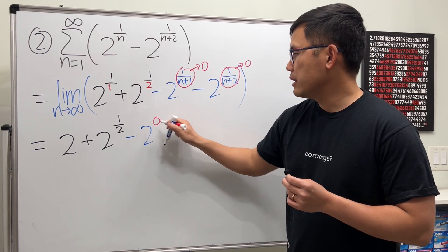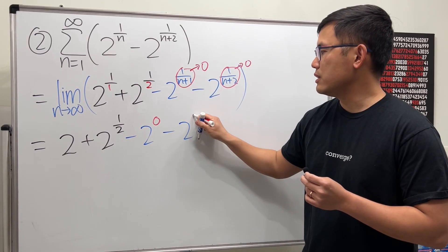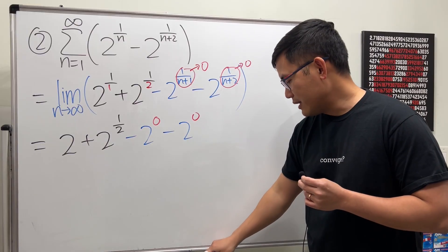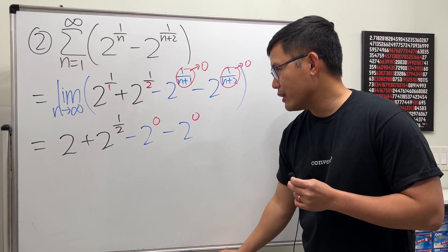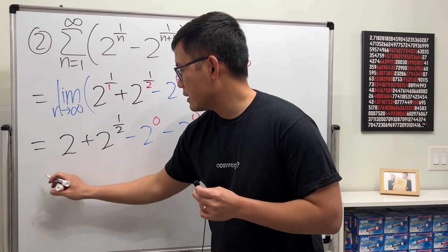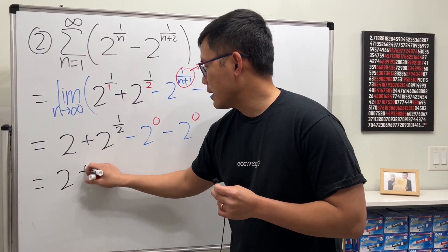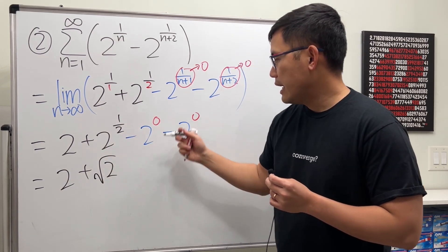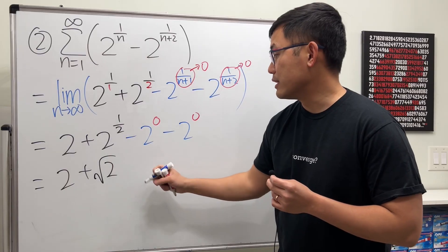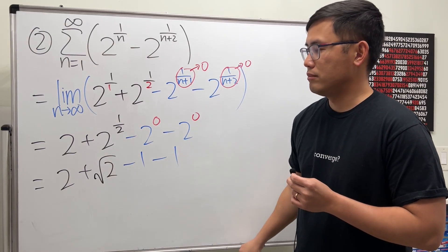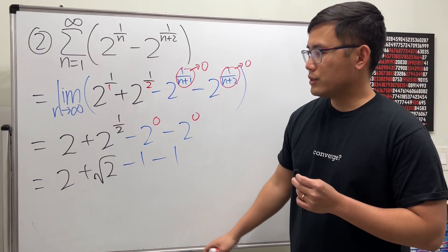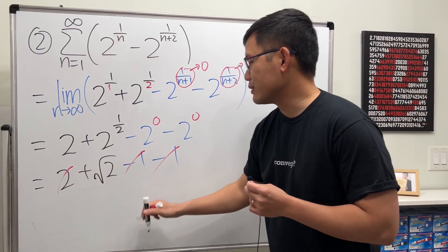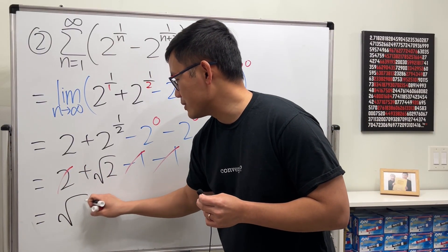Two to the zero is just one, so we have two to the first plus two to the one half, minus one minus one. Two minus one minus one — those cancel out, and we just have the square root of two.